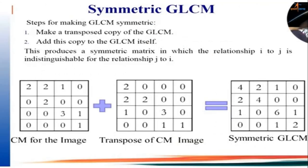Now we find the symmetry of the co-occurrence matrix. To do this, we take the transpose of the GLCM — rows become columns and columns become rows. The first row (2, 2, 1, 0) becomes the first column, the second row becomes the second column, and so on. We then add the original GLCM and its transpose to get the symmetric GLCM. For example, 2 plus 2 gives 4 in the corresponding position.